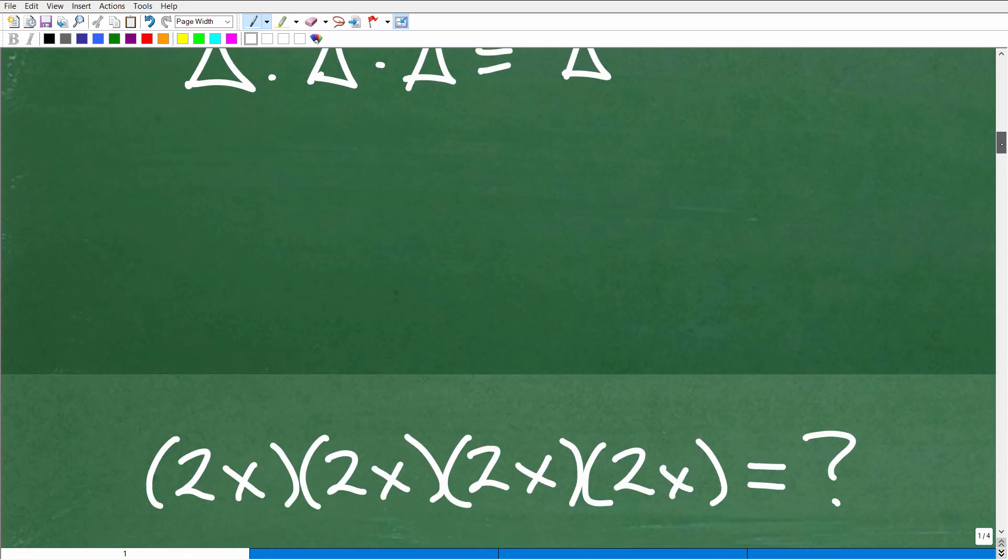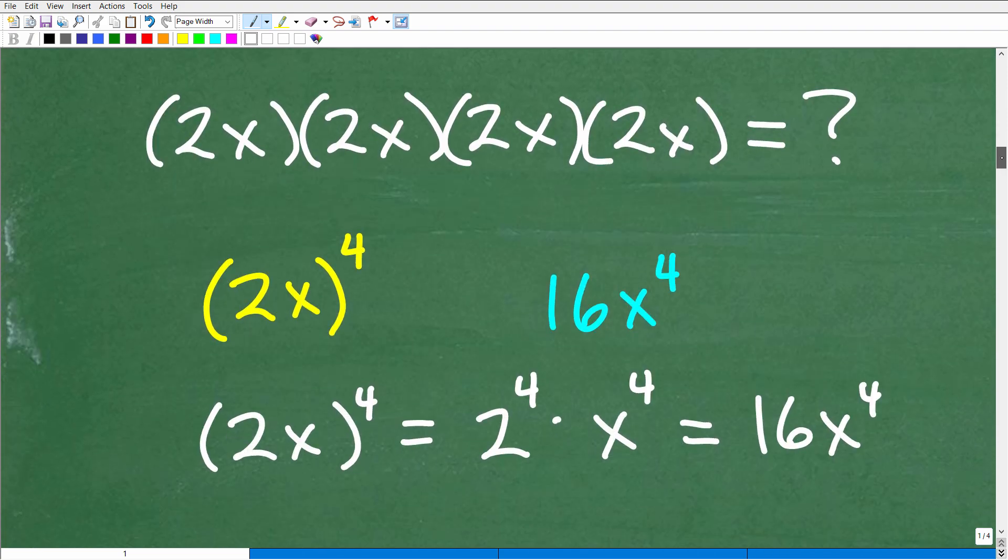And now let's go ahead and get into our actual problem here. Okay? So here, we have 2x times 2x times 2x times 2x. Well, what's being multiplied by itself over and over again? Of course, it's 2x. How many times is it being multiplied? Four times. So 2x times 2x times 2x times 2x is equal to 2x to the fourth power.